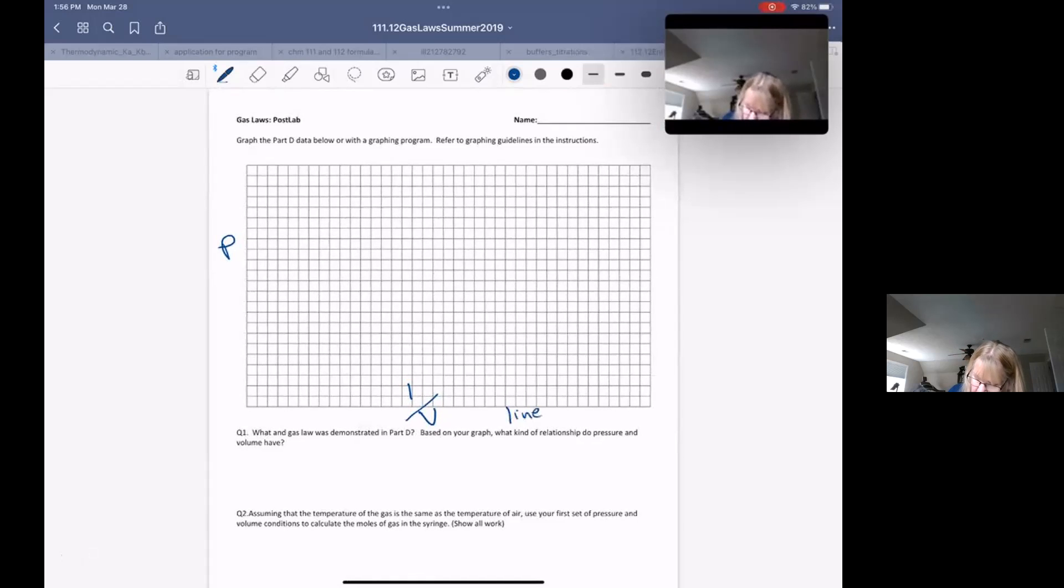If you graph one over volume versus pressure here, this one should give you a nice linear graph. Again, that's one over volume. And make sure when you graph it that it fits your graph. Your graph shouldn't look like this. It should fit the entire page.